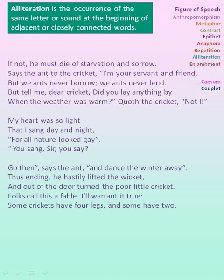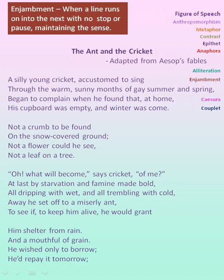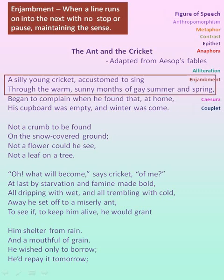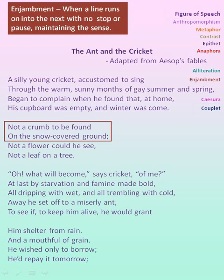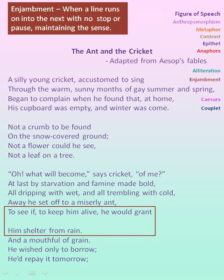Folks and fable are the alliterated words. Now let us see enjambment — when a line runs on into the next line with no stop or pause maintaining the sense, it is called enjambment. So here in the first line itself you can see 'a silly young cricket accustomed to sing' — through the wall there is no punctuation at the end of the first line, hence enjambment. In the second stanza also, the first line has no punctuation at the end.